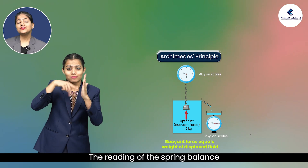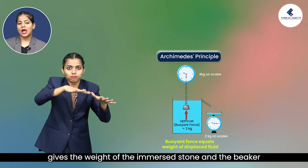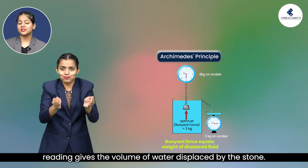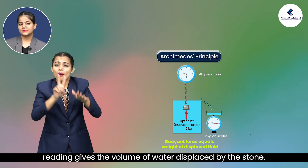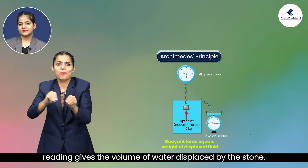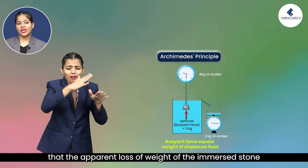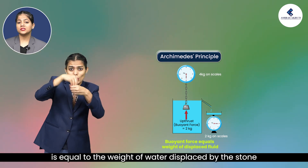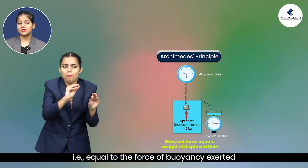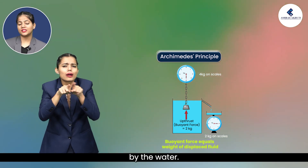The reading of the spring balance gives the weight of the immersed stone, and the beaker reading gives the volume of water displaced by the stone. We find that the apparent loss of weight of the immersed stone is equal to the force of buoyancy exerted by the water.